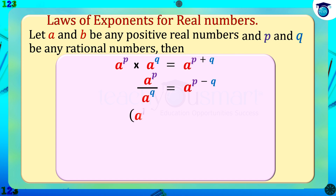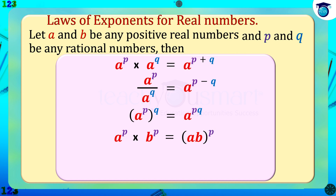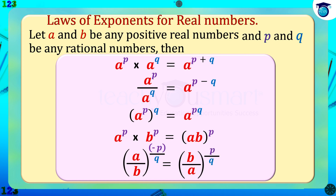Third, a raised to p whole raised to q equals a raised to pq. Fourth, a raised to p multiplied by b raised to p equals ab whole raised to p. Fifth, a by b whole raised to minus p by q equals b by a whole raised to p by q.